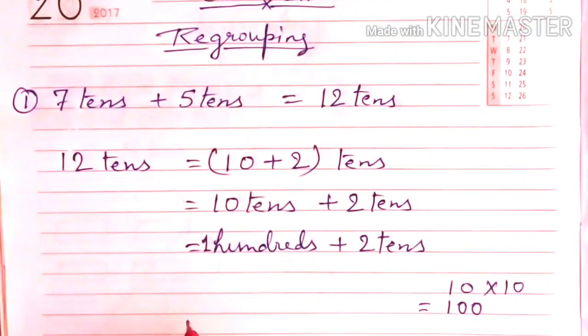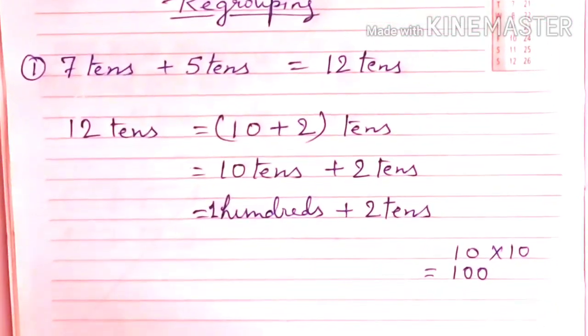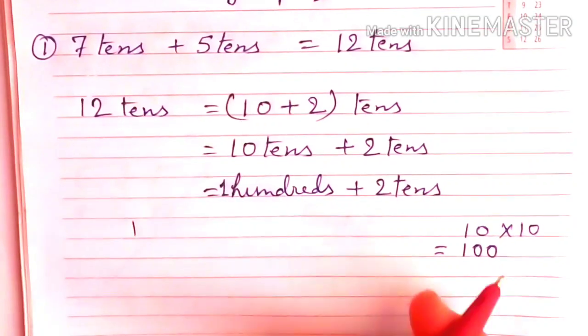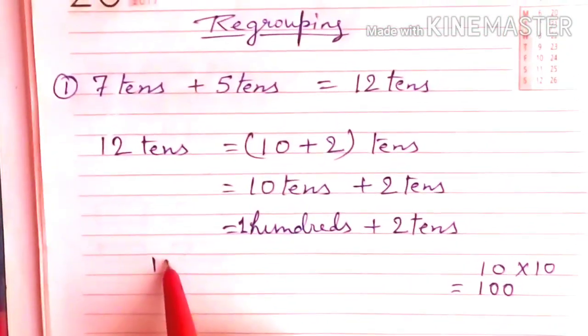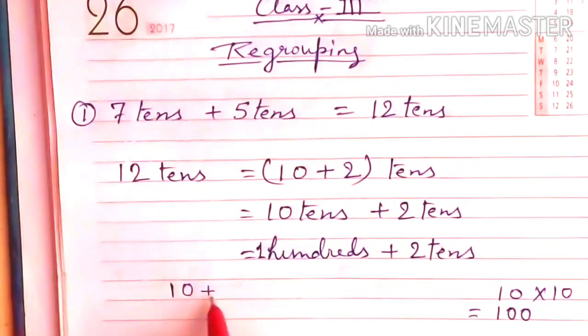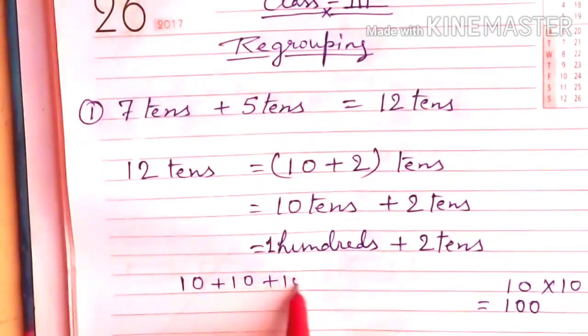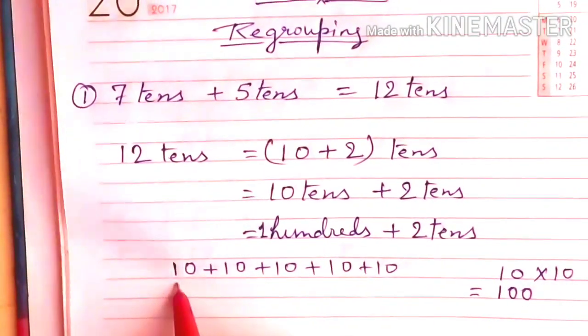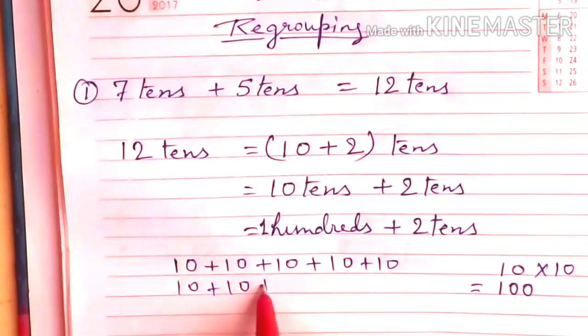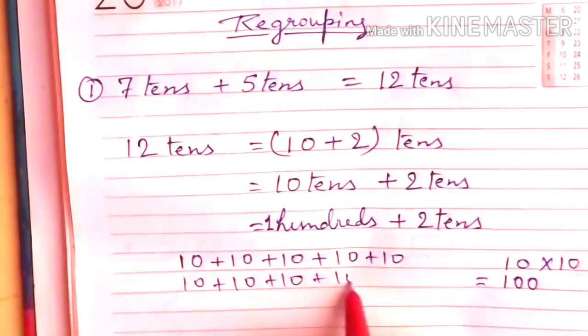If we add 10 ten times, 10 tens, if we multiply 10 by 10, what do we get? 100. Let's see 10 tens. We have 10, so 10 is here. 3, 4, 5, 6, 7, 8, 9, 10.